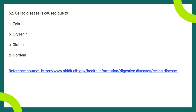The answer is gluten. Gluten is a wheat protein, and celiac disease is a chronic digestive and immune disorder that damages the small intestine, triggered by eating foods containing gluten. It can be diagnosed by a blood test or biopsies of the small intestine, and it can sometimes be genetic. The treatment is simply a gluten-free, healthy, and balanced diet.